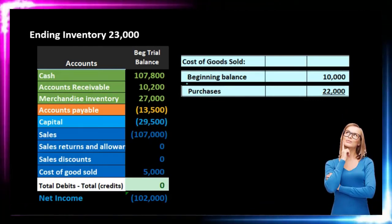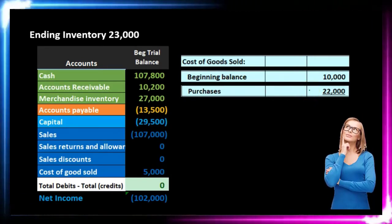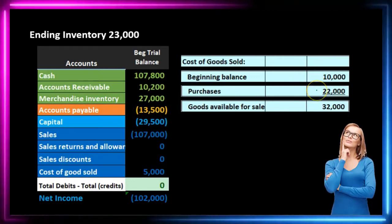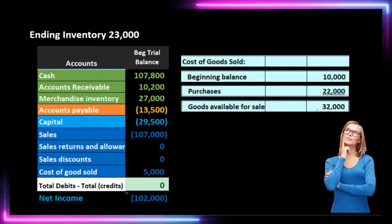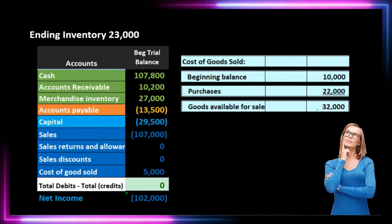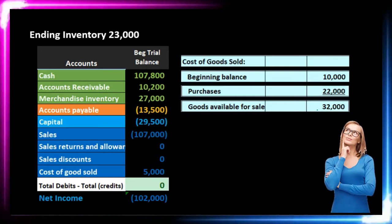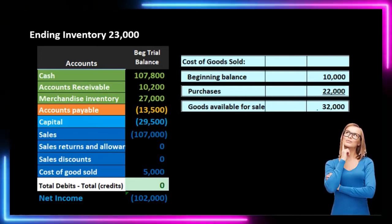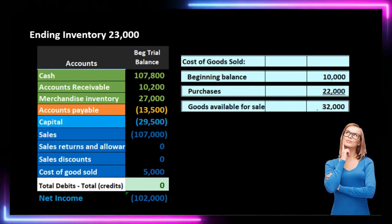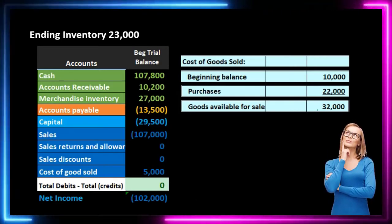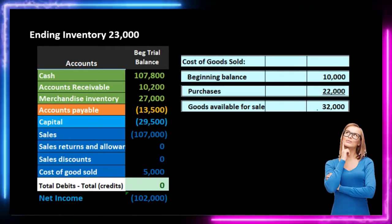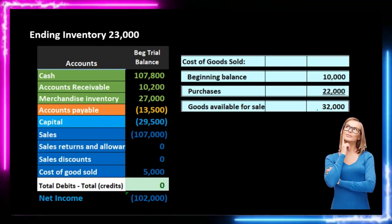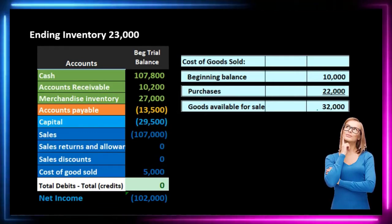We don't have to guess how many units we bought or the purchase price — it is what it is. Adding beginning inventory of $10,000 plus purchases of $22,000 gives us $32,000, which we call goods available for sale. That means during the month or year — whatever time period we're talking about — we could have sold up to $32,000 worth of inventory. We can do the same calculation in terms of units, but we're looking at dollars here. Throughout the month that's how much inventory could have gone through our hands and potentially been sold.